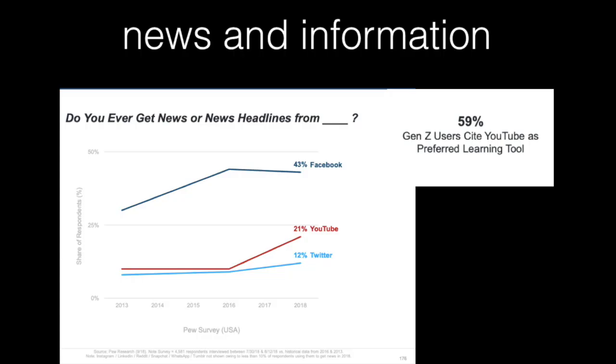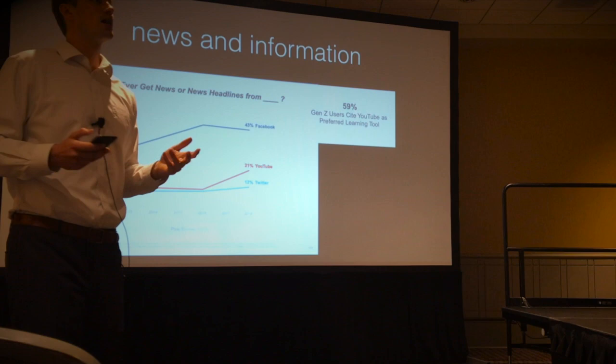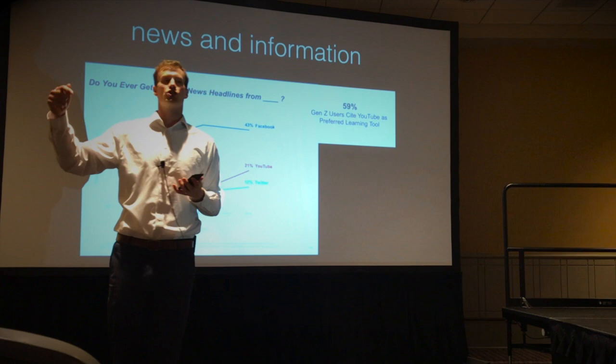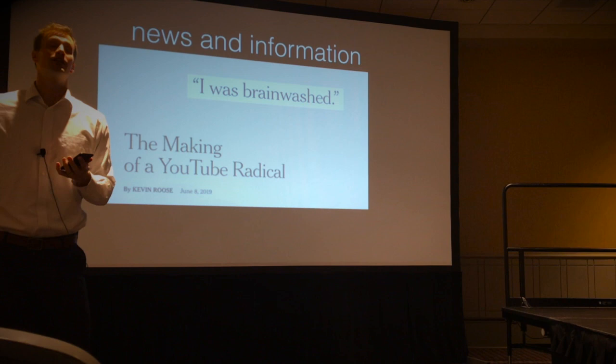We're also getting our information and news from social media: 43% from Facebook, 21% from YouTube, 12% from Twitter. Gen Z — our students — 59% cite YouTube as their preferred learning tool. And we're complicit in that: how many times do you assign a YouTube video for homework? That implies you can learn quality stuff on YouTube. But YouTube runs an algorithm that pushes you more extreme with every click down the rabbit hole.